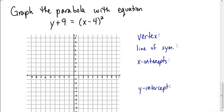I want you to take a minute now and graph this next parabola: y plus 9 equals x minus 4 quantity squared. You're going to need to find the vertex, the line of symmetry, the x-intercepts, and the y-intercept. If you don't know how to find any of those things, go back and watch the previous videos regarding the vertex, x-intercepts, or y-intercept. Pause the video when you're finished and hit play when you're ready to check your answers.